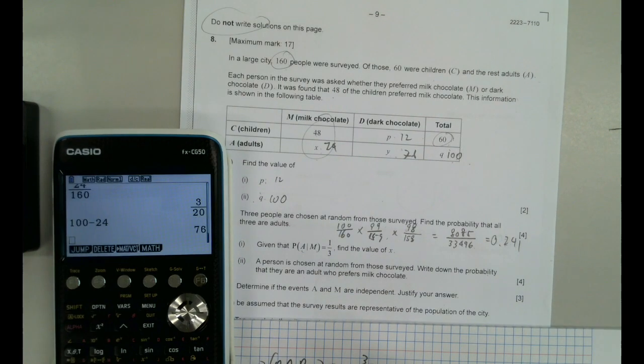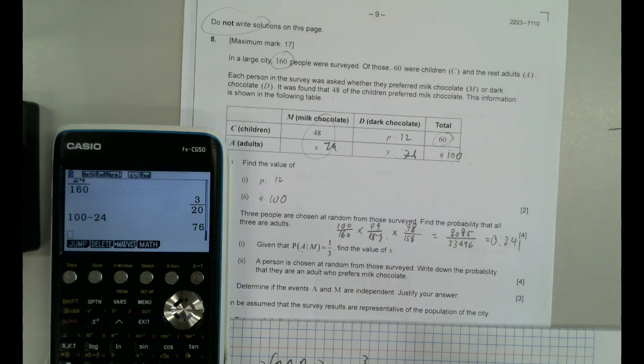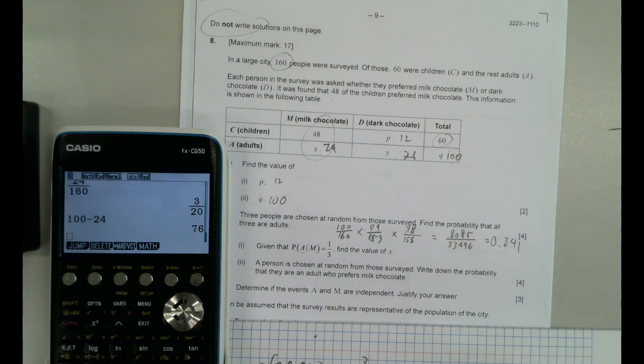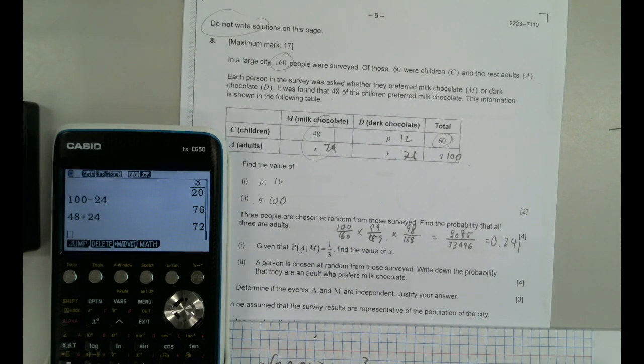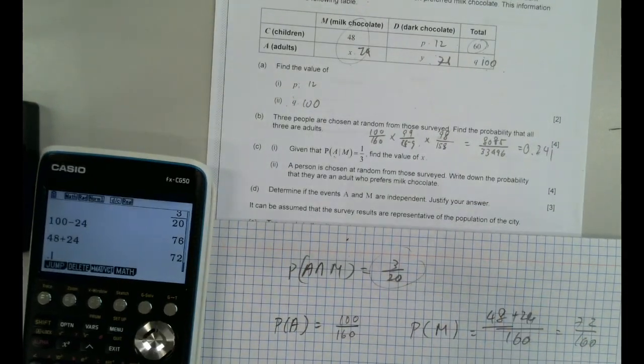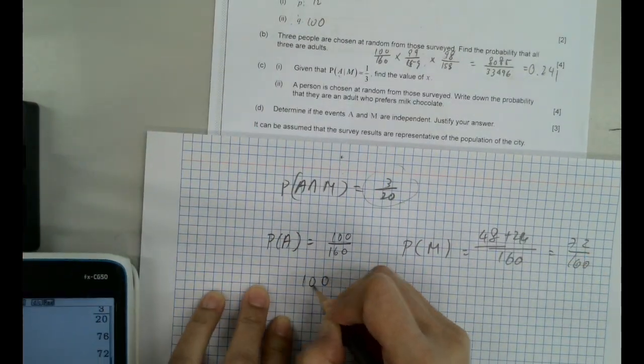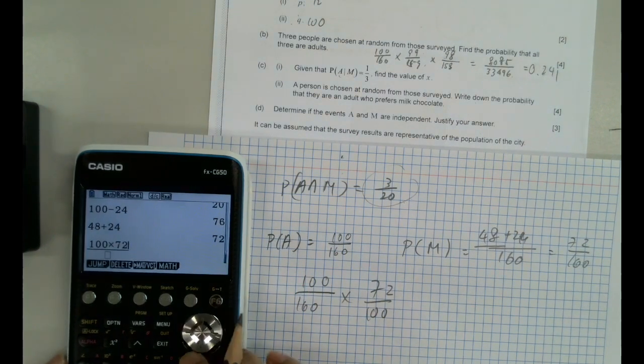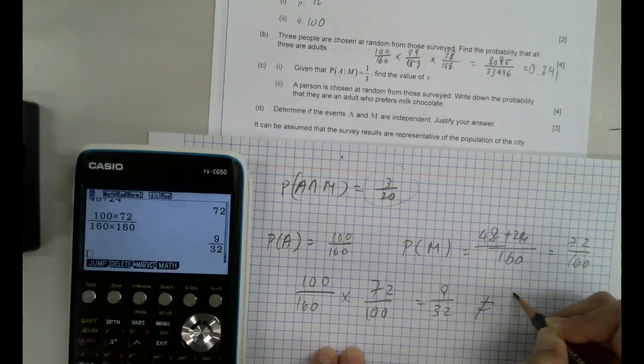76. So probability of adult is 100 out of 160. We don't need Y. And then probability of milk chocolate equals to 48 plus 24 over 160, equals to 72 over 160. Now we multiply that to see if it's equal to the intersect. If it is, it's an independent event. If it's not, sorry. So we have 100 over 160 times 72 over 160. So that gave us 9 over 32, which is not equal to 3 over 20.